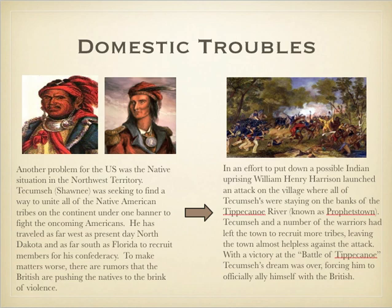The second problem America runs into is domestic. We have huge issues between ourselves and the Native Americans at this time. As America has continued to push west past the Appalachian Mountains, Natives have continued to fight back, especially as we continue to have a lot of broken treaties on our end.